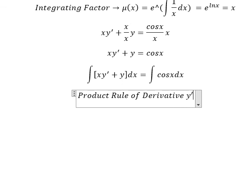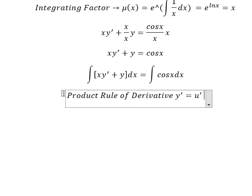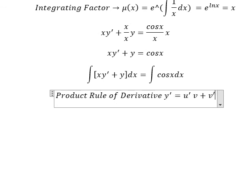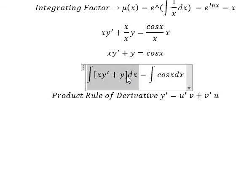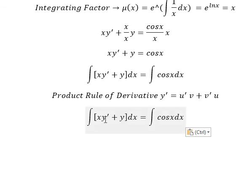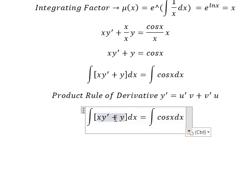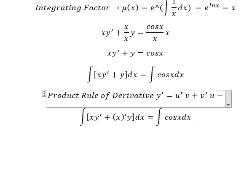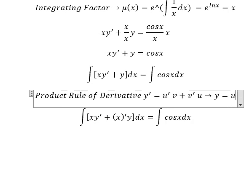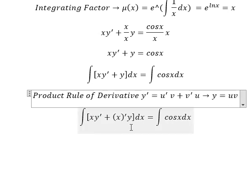Next we apply the product rule of derivatives. So we have the first derivative of y equals the first derivative of u multiplied by v, plus u times the first derivative of v. We see that this is the first derivative of u multiplied by v, and we have number 1 here — that's the first derivative of x. If we do this, we have u times v, which means we have x times y.